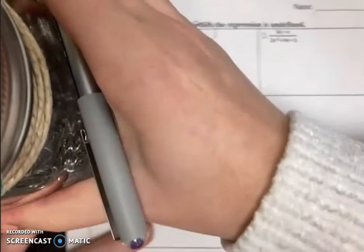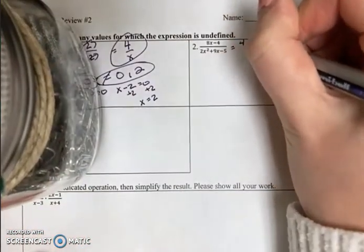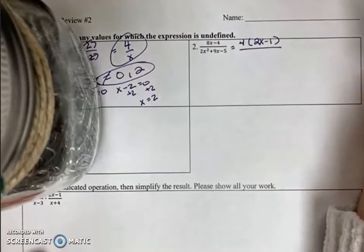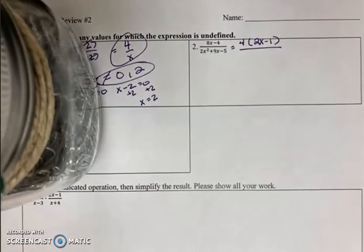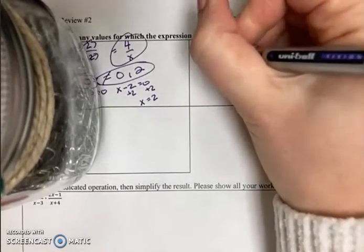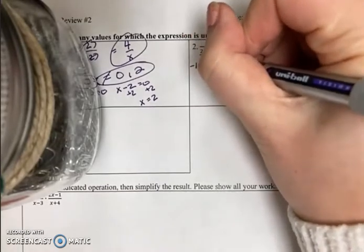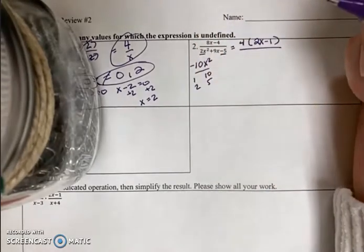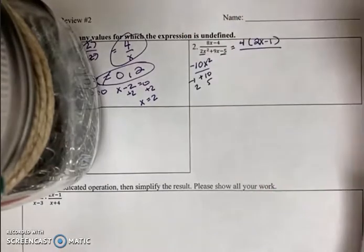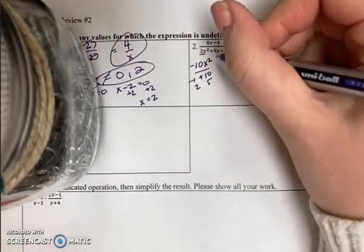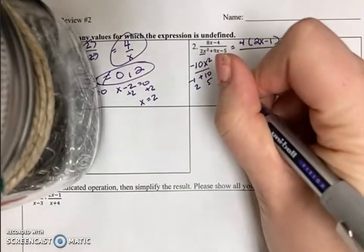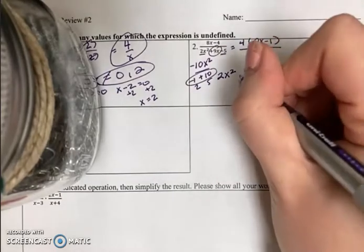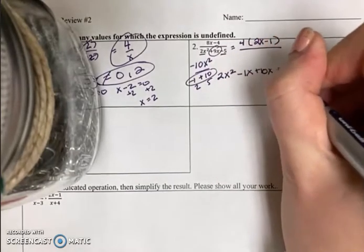Number 2, we have once again a GCF in the numerator. So that's 4 times 2x minus 1 over, I have a case 2 trinomial here. This is typically what students struggle with the most when factoring. The first thing that you should do is multiply these two terms together. So that gives me a negative 10x squared. Looking at the factors 1, 10, 2, 5, I want to try and get to a positive 9 using same sign. So that would have to be minus 1 and plus 10. So because this is a case 2, I now have to rewrite it as four terms.